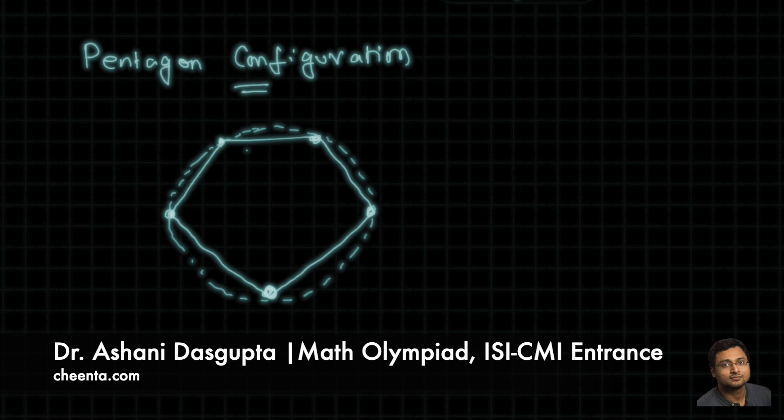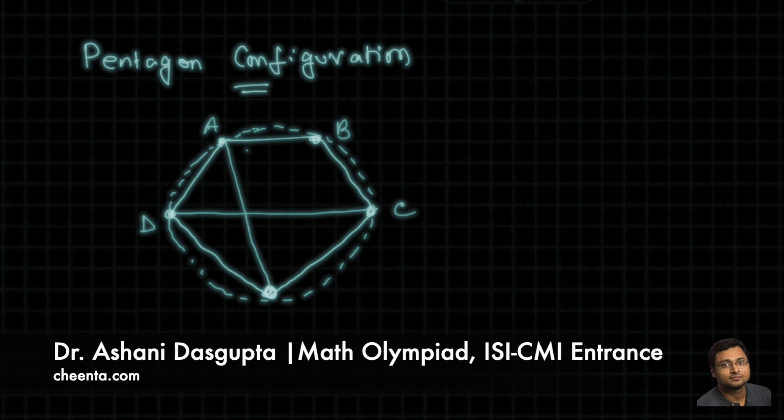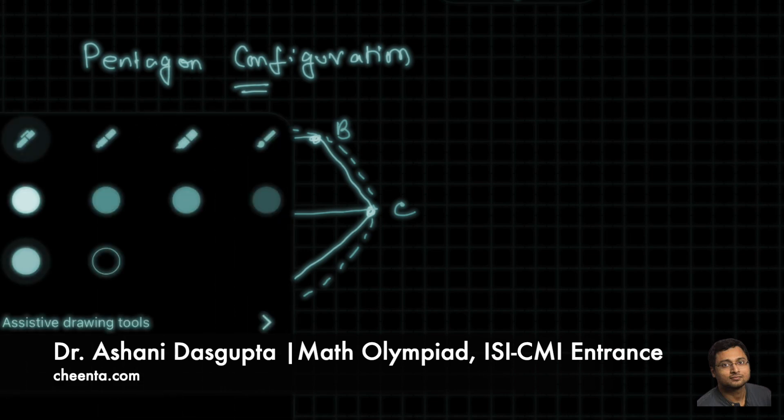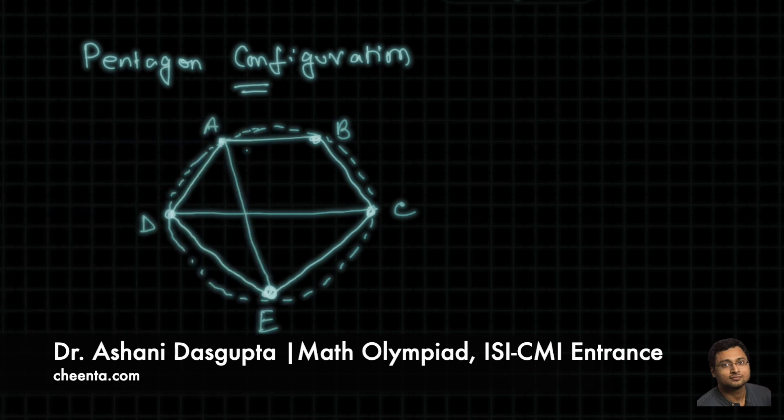So maybe we first say ABCD is a cyclic quadrilateral, and then maybe we say that ABCE is also a cyclic quadrilateral. Now of course both of the cyclic quadrilaterals lie on the circle passing through ABC.